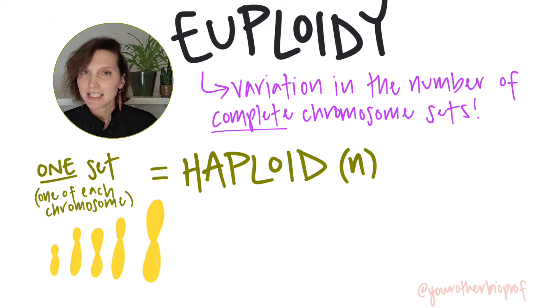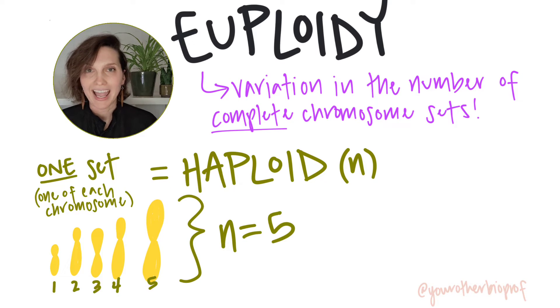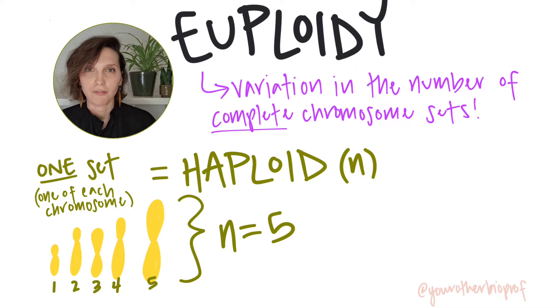In this example, it's five. So our haploid number n would be equal to five — one each of five different chromosome types.